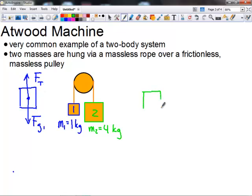The free body diagram for mass two is going to be eerily similar. In fact, it is exactly the same, except the fact that we do have a different mass. So the force of tension upward is still Ft, but the force of gravity downward we're going to call Fg2.